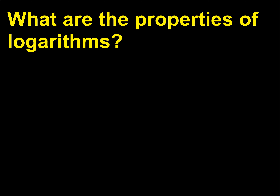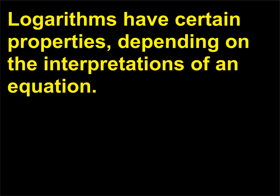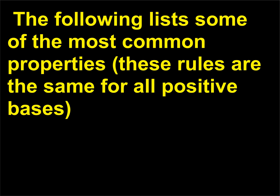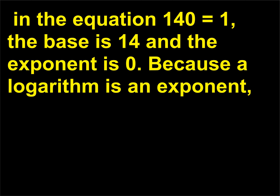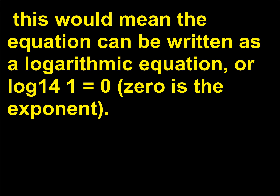What are the properties of logarithms? Logarithms have certain properties depending on the interpretations of an equation. The following lists some of the most common properties; these rules are the same for all positive bases. Log 1 = 0, because a⁰ = 1. For example, in the equation 14⁰ = 1, the base is 14 and the exponent is 0. Because a logarithm is an exponent, this would mean the equation can be written as a logarithmic equation: log₁₄(1) = 0, where 0 is the exponent.